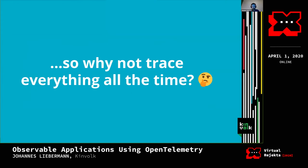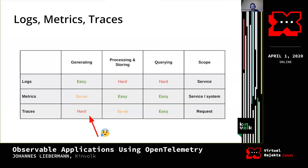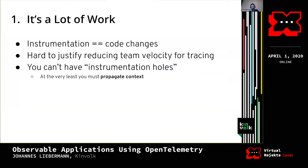So why not trace everything all the time? Up until recently, saying tracing is hard to generate was a big understatement. First, it's a lot of work — instrumentation usually requires code changes, and it's typically hard to justify reducing your team's velocity just to enable tracing. It's even harder to ask an adjacent team to instrument their service, especially if they don't have resources for it, since you can't have instrumentation holes in the request chain.